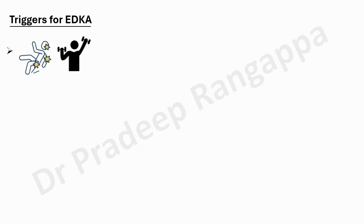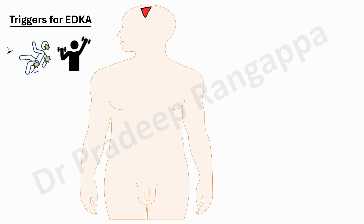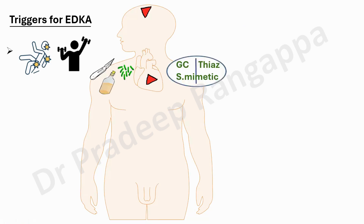The triggers for EDKA are very similar to DKA. It could be polytrauma, exercise, stroke, surgery, alcohol, infection, ACS. Drugs like glucocorticoids, thyrozines, and sympathomimetic drugs are also triggers. Patients with a background of liver disease or pancreatitis are at risk as well. This is a typical ICU patient — they come with stroke, ACS, underlying CKD, or liver dysfunction. All these are triggers for euglycemic diabetic ketoacidosis.